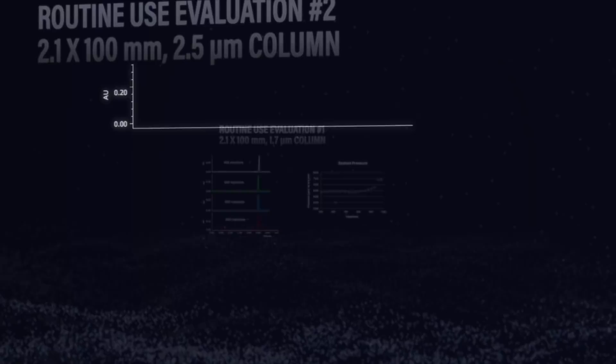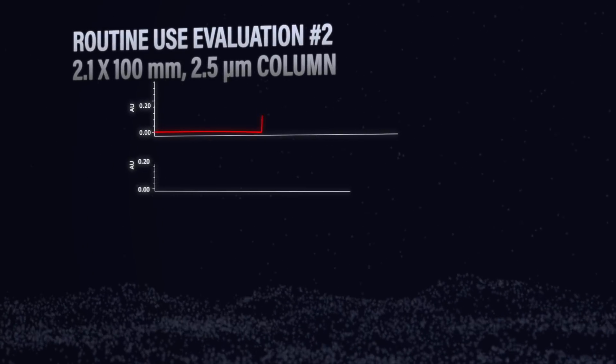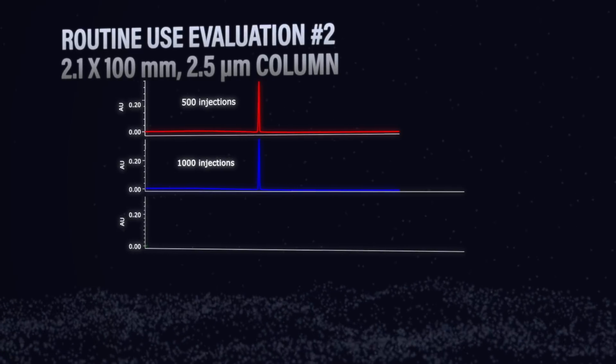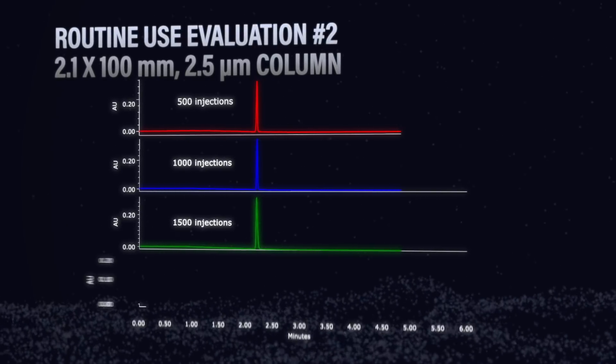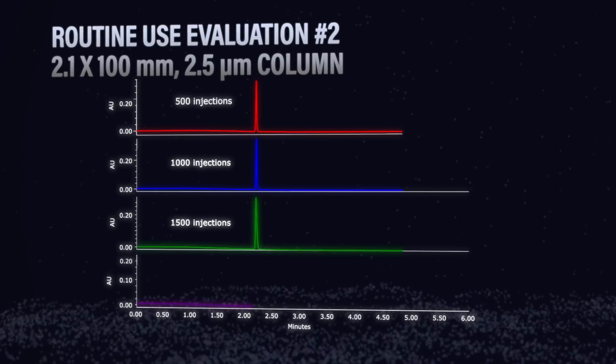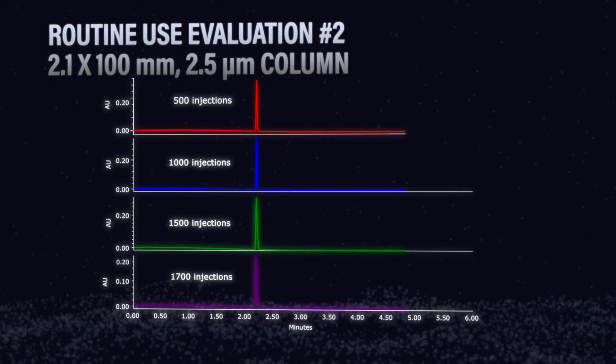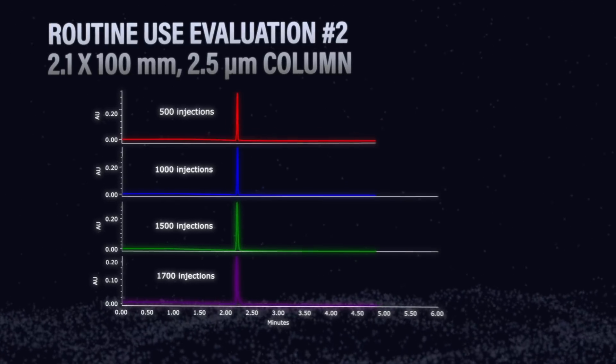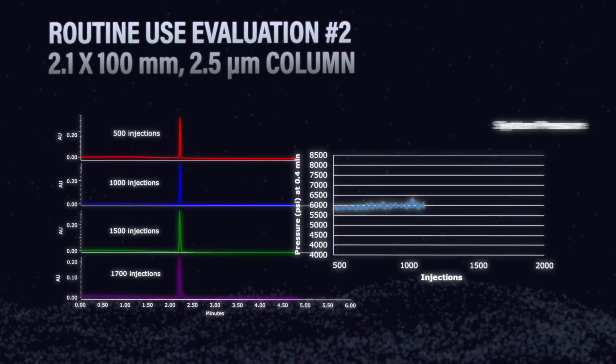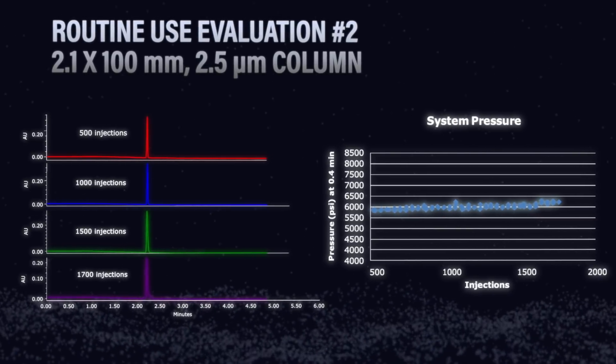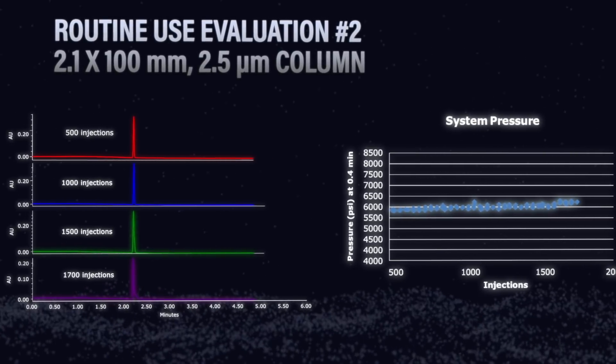Here we plotted from 500 injections up to 1,000 injections, 1,500 injections up to 1,700 injections and you can see the peak shape stays fairly good and the system pressure stays fairly stable. It looks like the peak doesn't actually start to break down until roughly around 1,700 injections which is twice the lifetime of the 1.7 micron column. Even though our sample had all of those things in it.